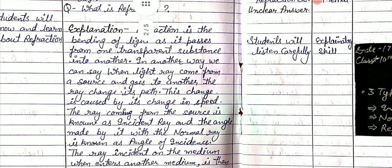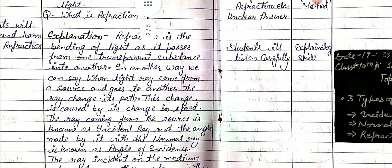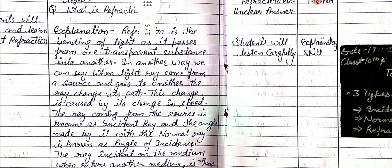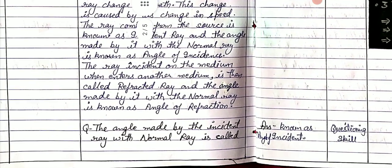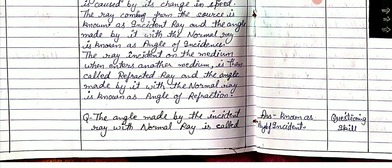Due to the explanation, students will listen carefully and we use explanation skill. We write some points on the blackboard — you can see. After that we question: the angle made by the incident ray with the normal ray is called the angle of incidence.